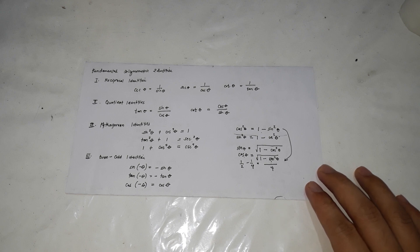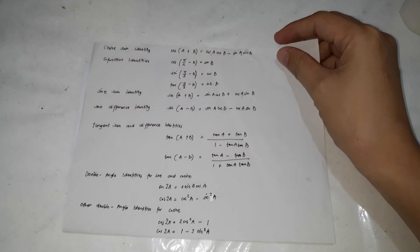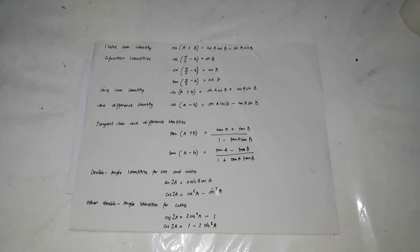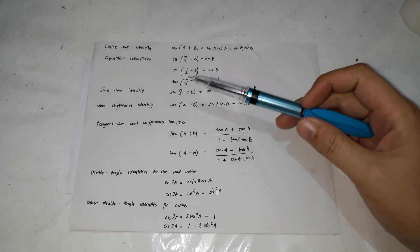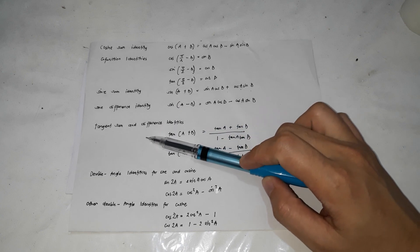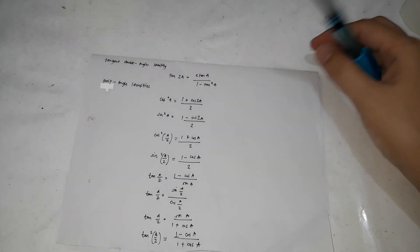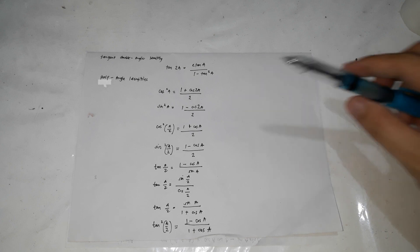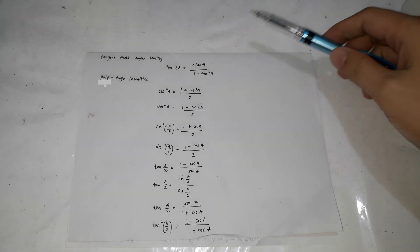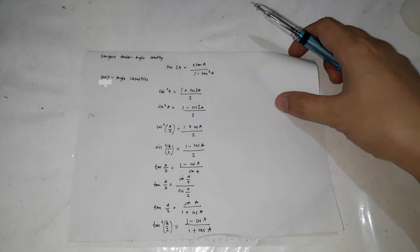You can screenshot this. These are the fundamental trigonometric identities. We also have other trigonometric identities: the cosine sum identity, the co-function identities, the sine sum identity, sum difference, sine difference identity, tangent sum and difference identities, the double angle, the other double angles, the tangent double angle identity, and the half angle identities. These are important to familiarize with because they are necessary for solving the problems.